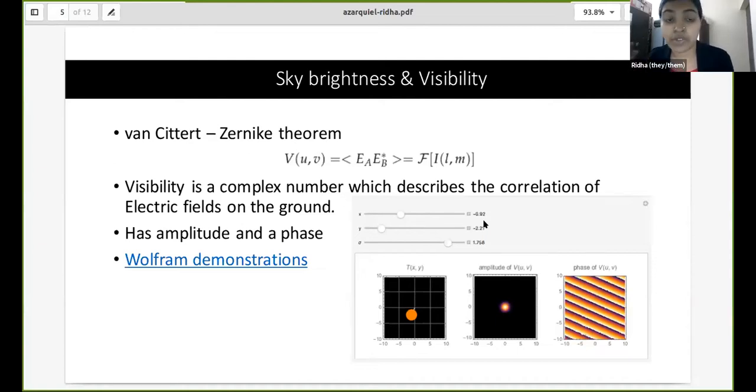It will give you the visibility of the object and the visibility is the Fourier transform of the intensity of the sky brightness of the source. And this visibility is a complex number, so you have an amplitude and a phase.